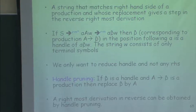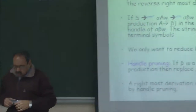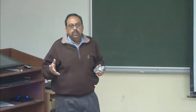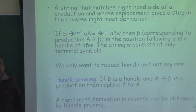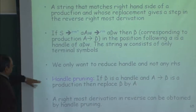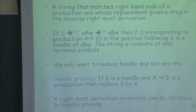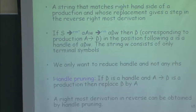We only want to reduce handles and not any right-hand side. The first example we discussed in shift-reduce parsing showed that just matching a pattern without worrying about whether it gives a reverse derivation step led to a situation where we could not move further — wrongly concluding the string did not belong to the language, when actually it was in the language. Handle pruning is the key step: finding a handle, reducing it to the left-hand side, and thereby reaching the start symbol. The rightmost derivation in reverse order is obtained just from handle pruning.